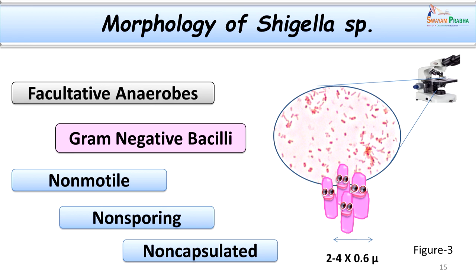Let us now study the morphology of Shigella species. Shigella organisms are gram-negative bacilli — they appear pink, small, short bacilli of size 2 to 4 micrometers by 0.6 micrometers. They grow on ordinary media and are facultative anaerobes, meaning they are okay with or without the presence of air. They are non-motile, non-flagellated, non-sporing, and not capsulated.